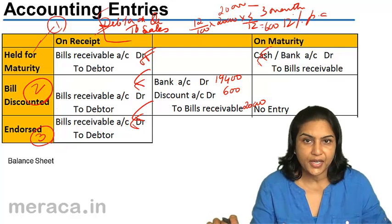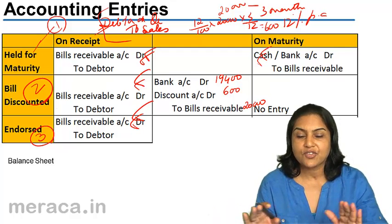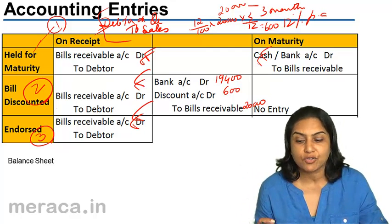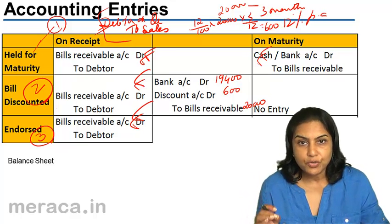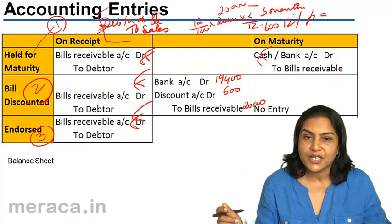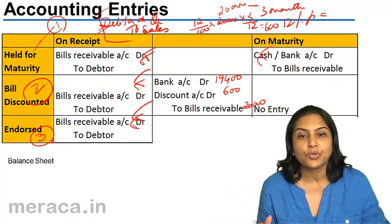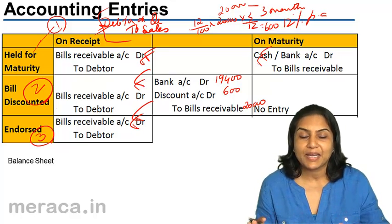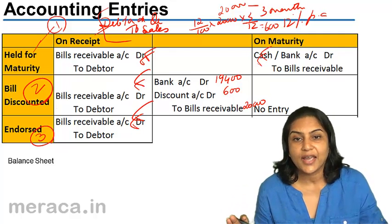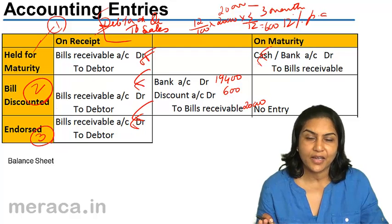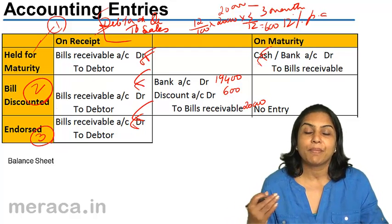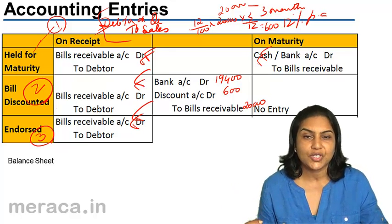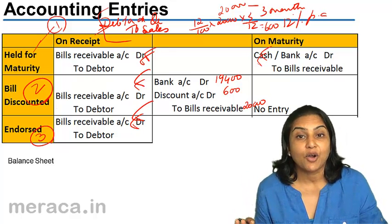On maturity, assuming these entries are being passed on the assumption that the bill is honored, Y will make the payment of $20,000 to the bank. The bank will present the bill to Y and Y will make the payment to the bank. We need not be concerned with that transaction anymore. We do not pass an entry when the bill matures because the bill is no longer with us — the bill is an asset of the bank. The bank will collect the proceeds against it; we need not pass any accounting entry.